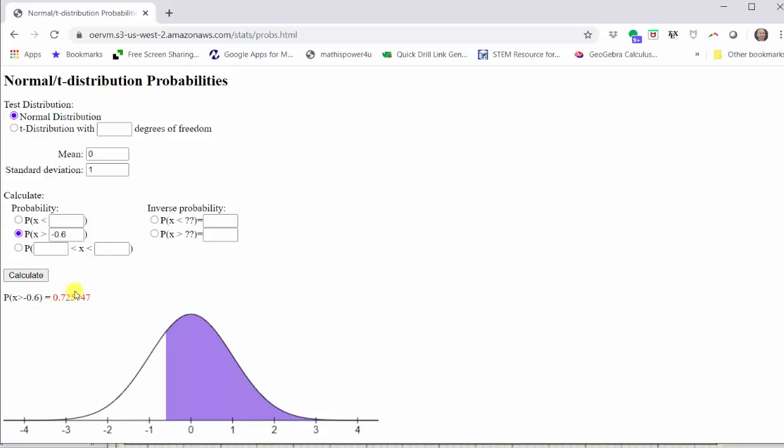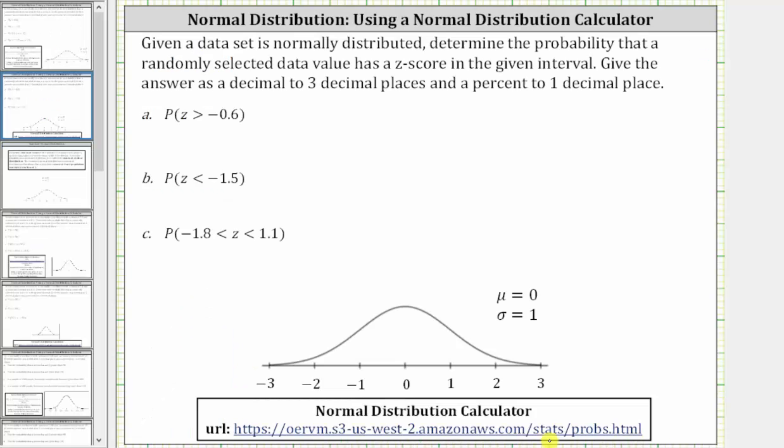The probability is shown here in red, but also looking at the graph below, notice the area is shaded below the curve to the right of the z-score of negative 0.6 is shaded. This area represents the probability, which to three decimal places is approximately 0.726. Let's go ahead and record this. So we have the probability of under three decimal places, which is the percentage is equal to 72.6%.